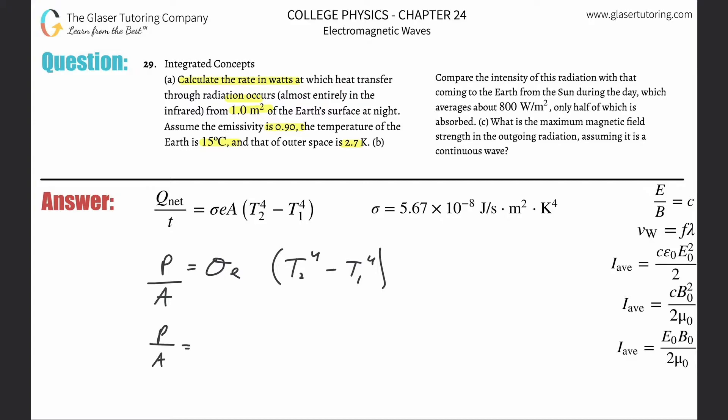The sigma, these are just constants going back to chapter 14. If you need a review of this, please seek out the chapter 14 problems. Emissivity is 0.9. The 15 degrees Celsius you've got to convert that into Kelvin, so add that to 273. That works out to be 288.